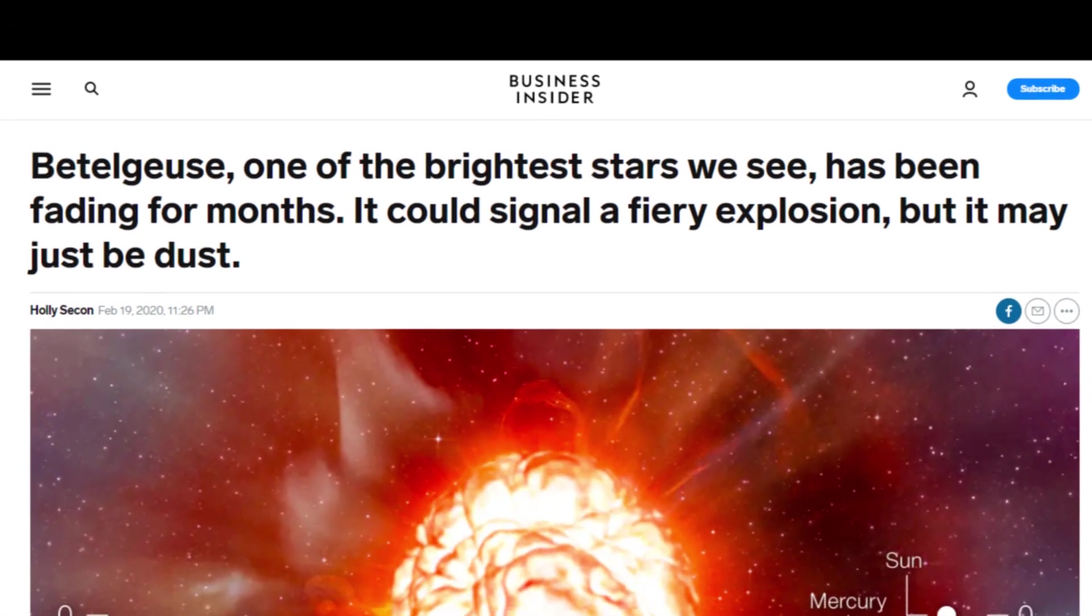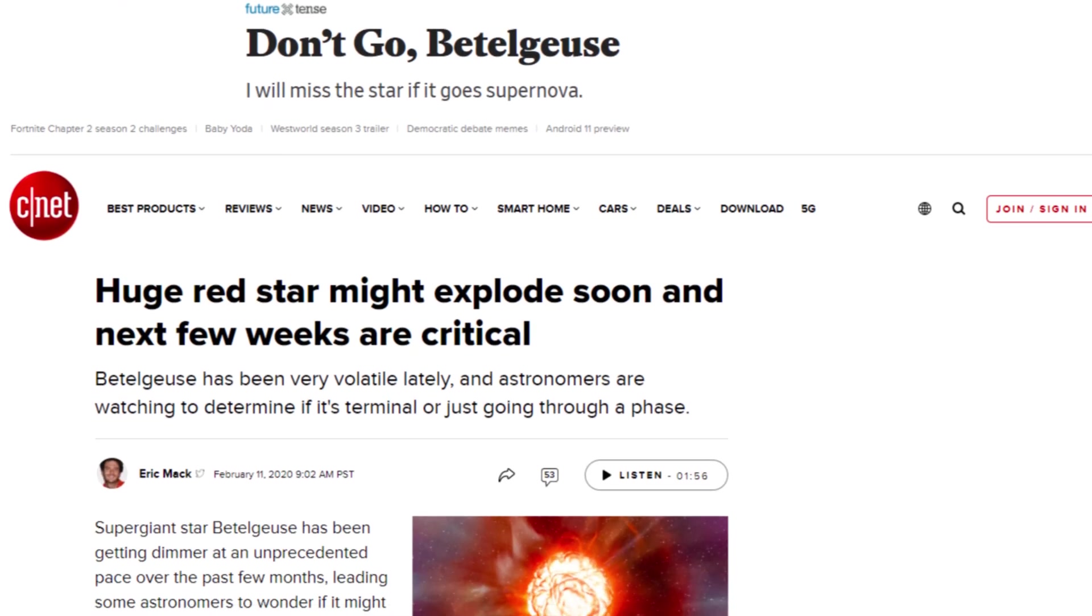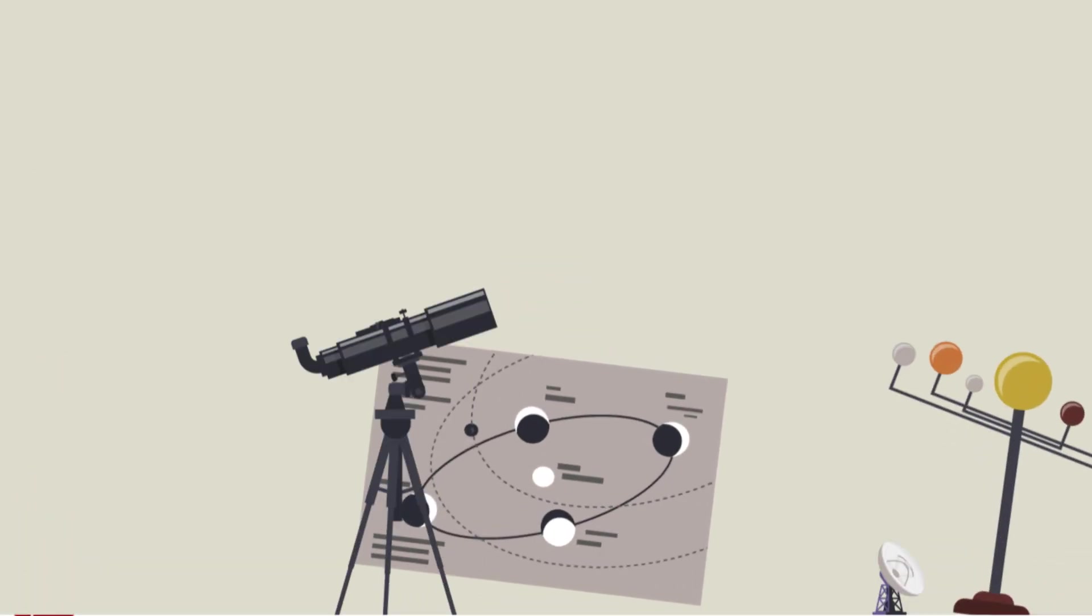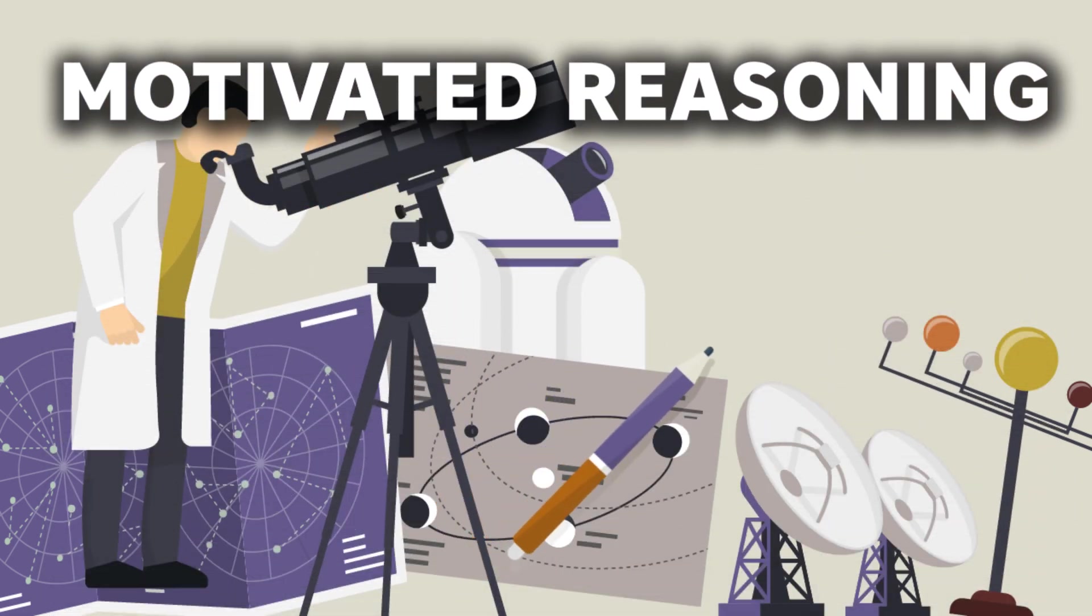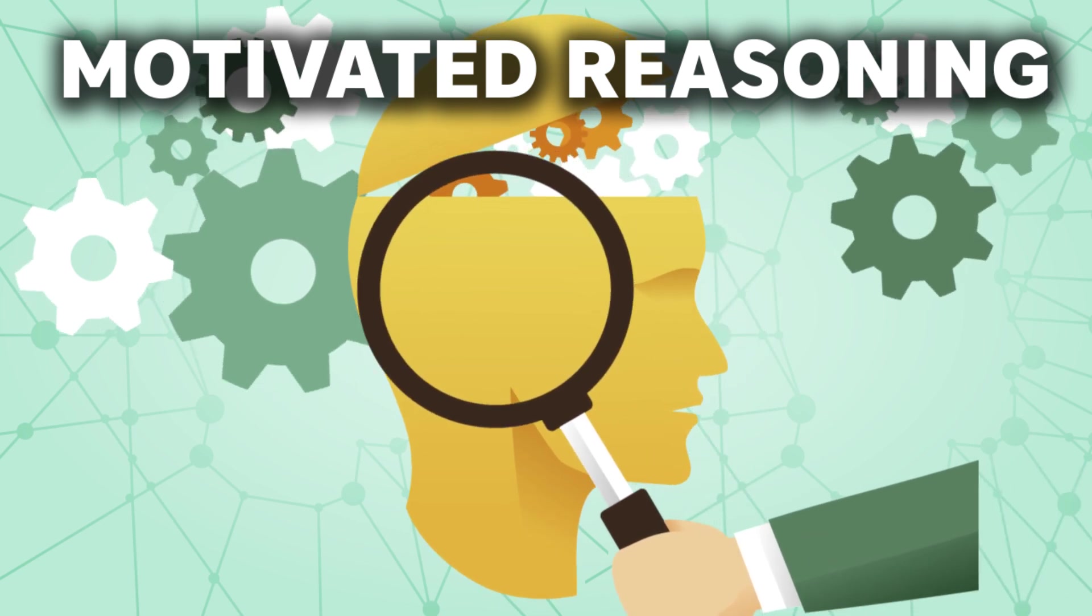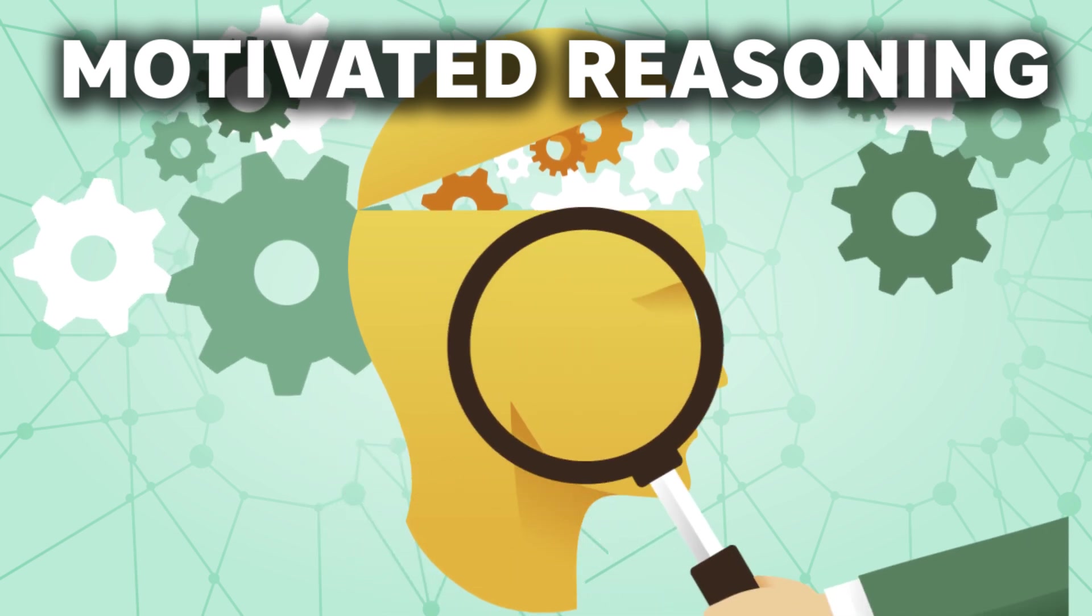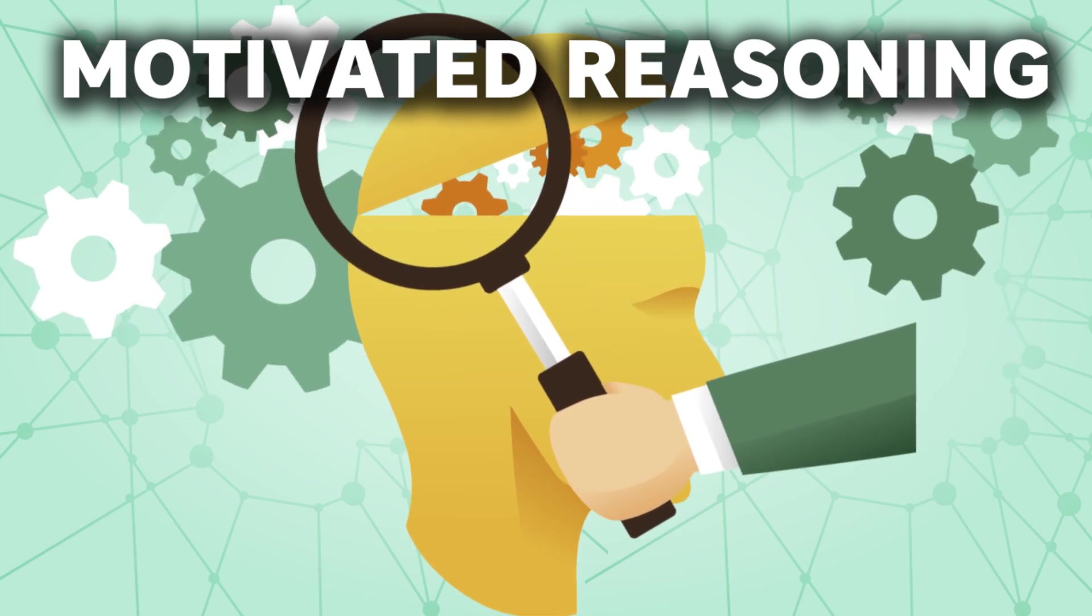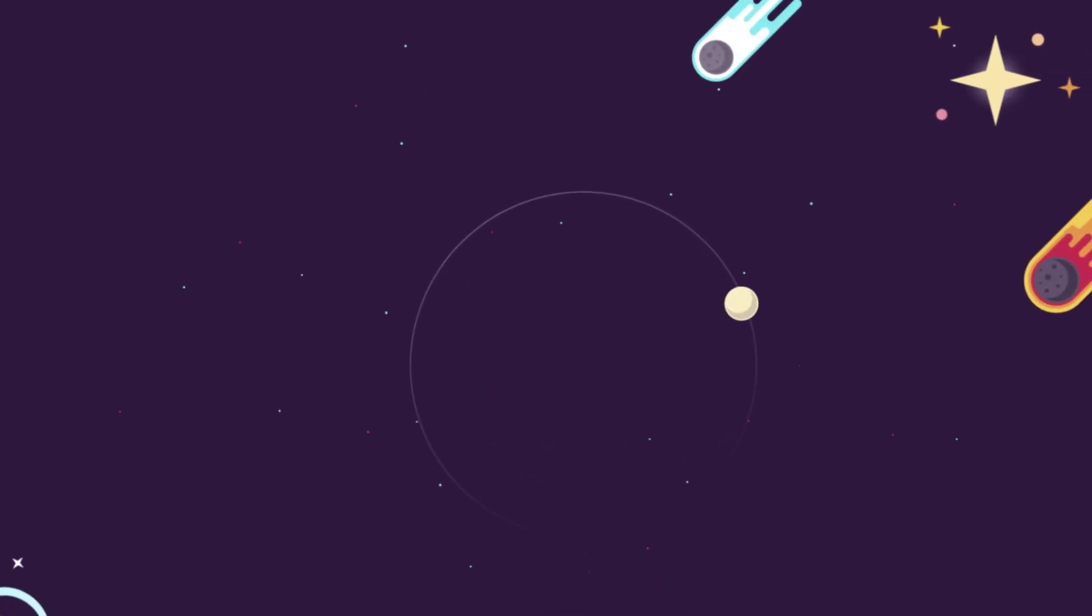Then again, we see a lot of headlines in news agencies about Betelgeuse exploding any time now because it's showing instability and fading. And we will get to see the greatest fireworks humanity has ever seen. But associating the recent optical fading of Betelgeuse with imminent explosion is a logical fallacy known as motivated reasoning. Motivated reasoning is a phenomenon studied in cognitive science and social psychology that uses emotionally biased reasoning to produce justifications and decisions that are most desired rather than those that are most logical while still reducing cognitive dissonance. So it's kinda similar to confirmation bias.